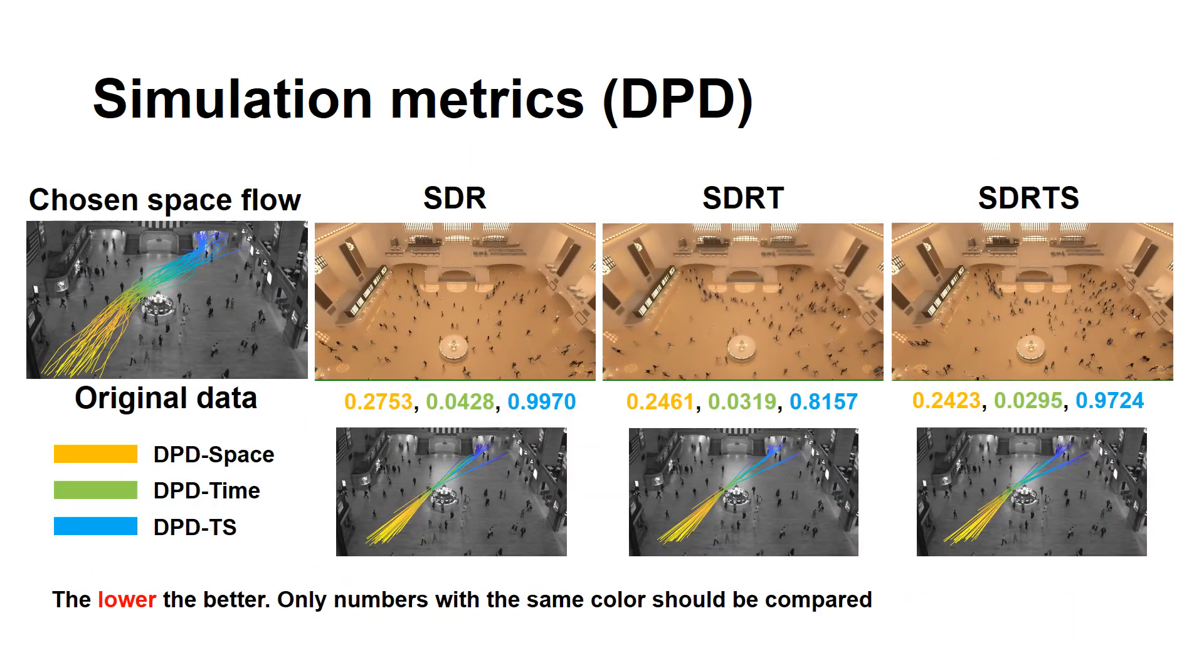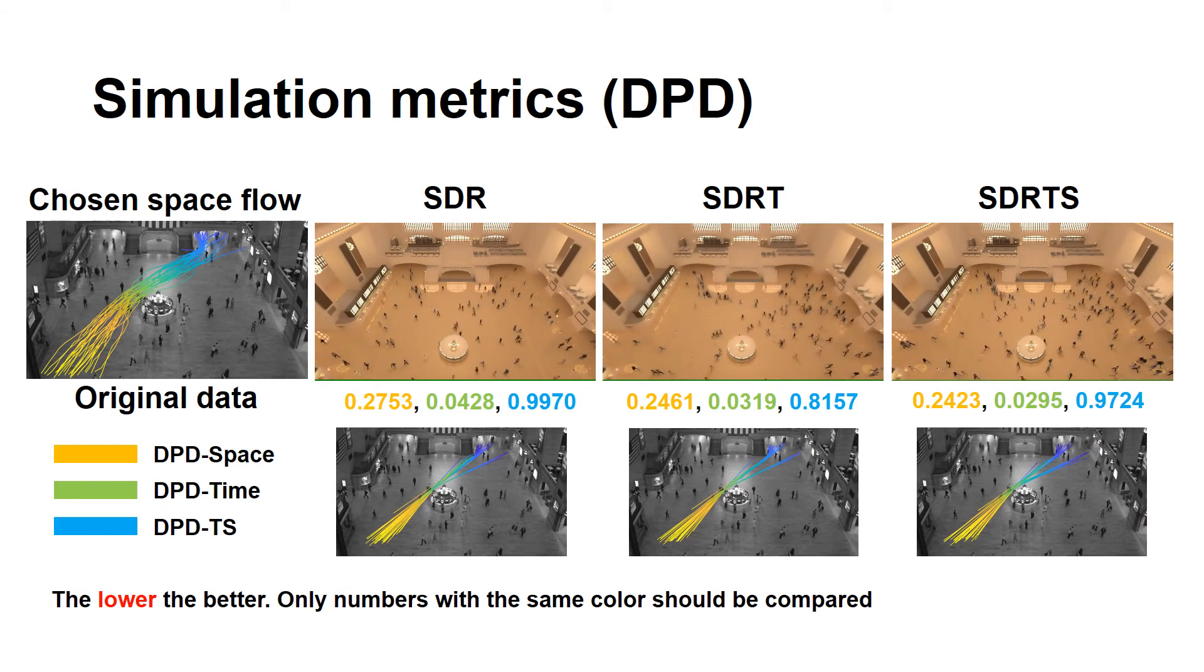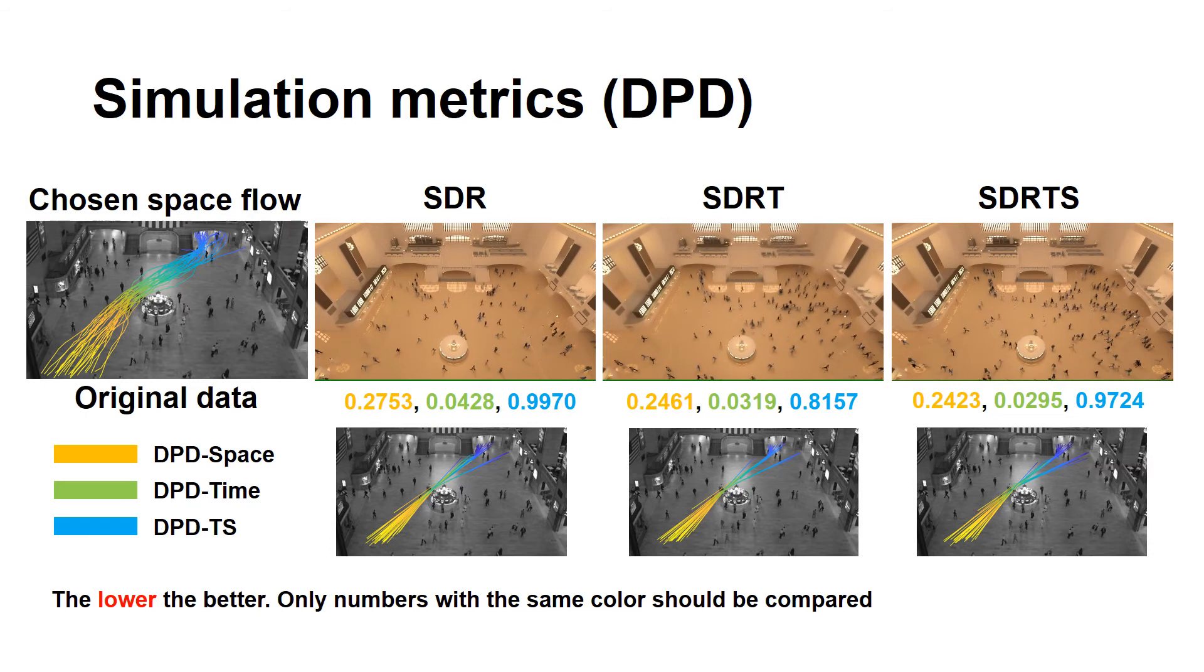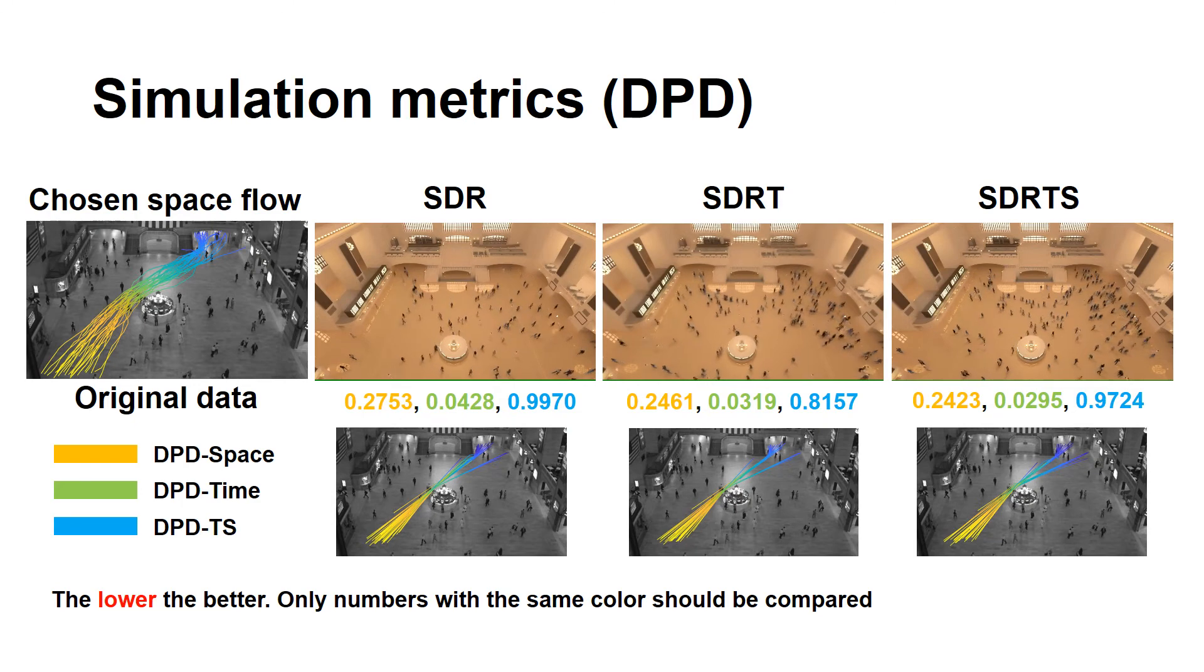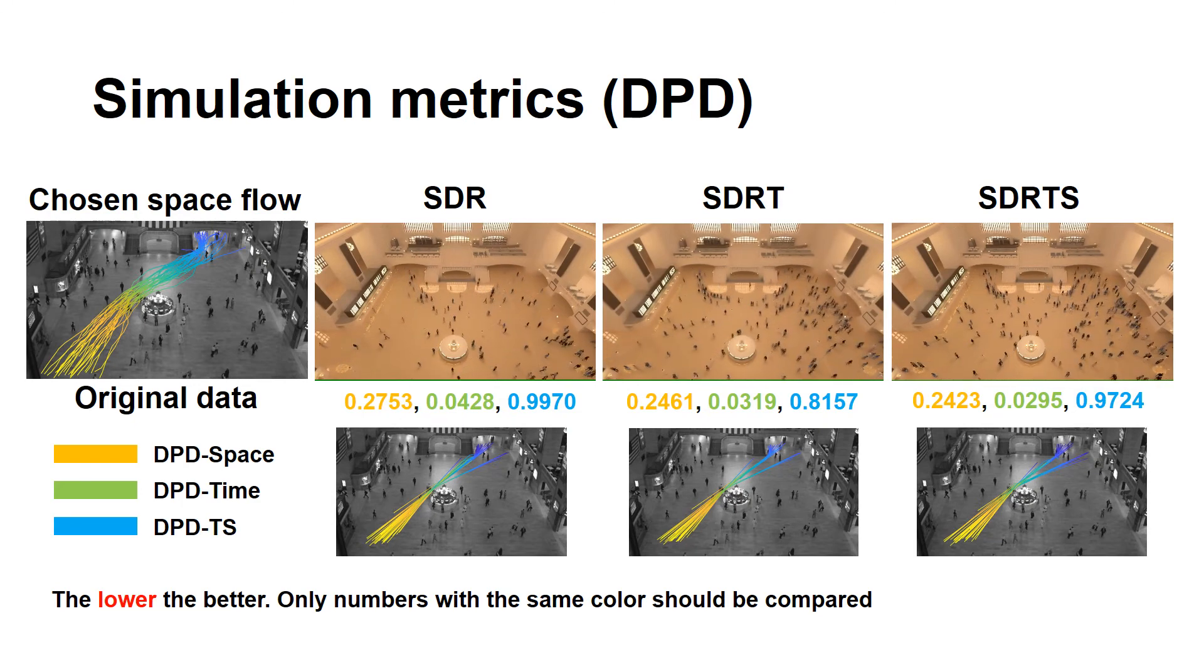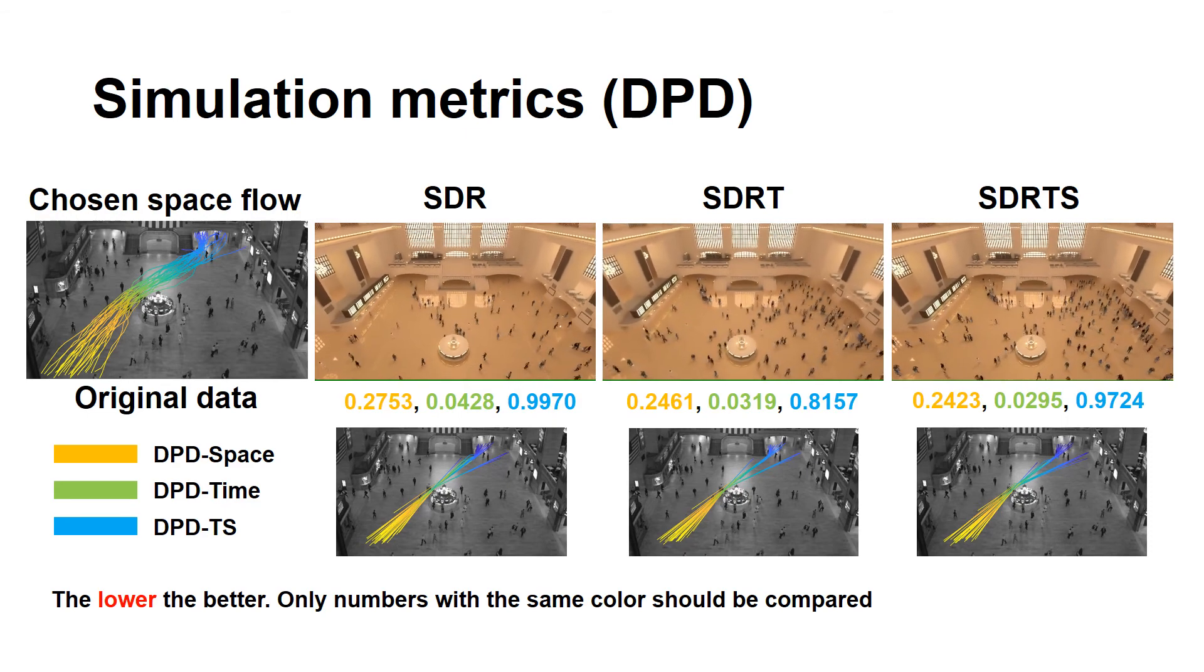If the user is interested in looking into a certain flow, we can use distribution pair distance, or DPD metrics. Given such a space flow, we can compare the simulations with real data on that flow in space, time, and time speed. The corresponding flows in simulation are shown below their corresponding simulation video. We omit the random situation due to space limit.